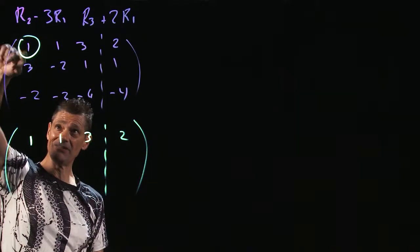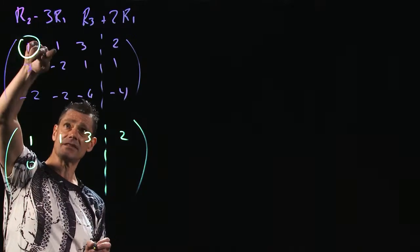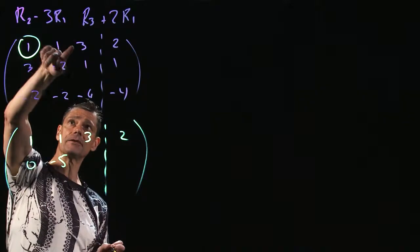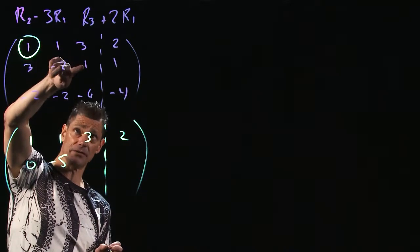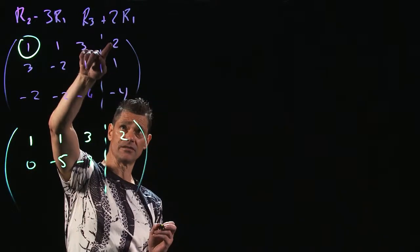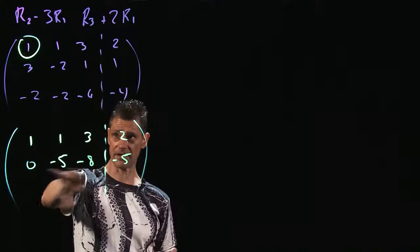Now -3 times 1 plus 3 is 0, which is what I wanted to do. -3 times 1 minus 2 is -5. -3 times 3 is -9 plus 1 is -8. And -3 times 2 is -6 plus 1 is -5. So that's what's happening for that second row.